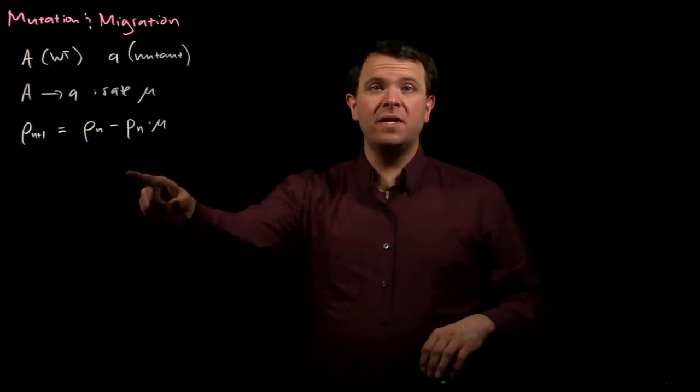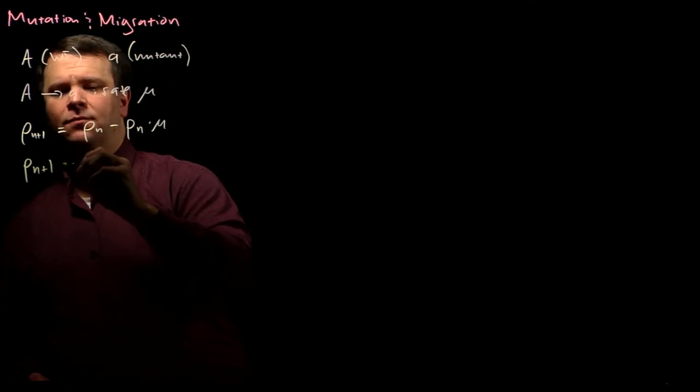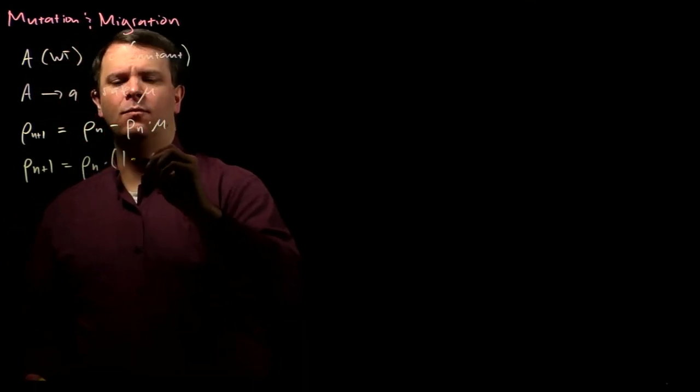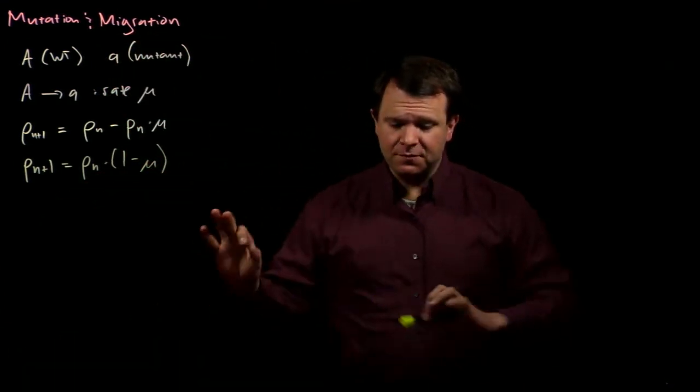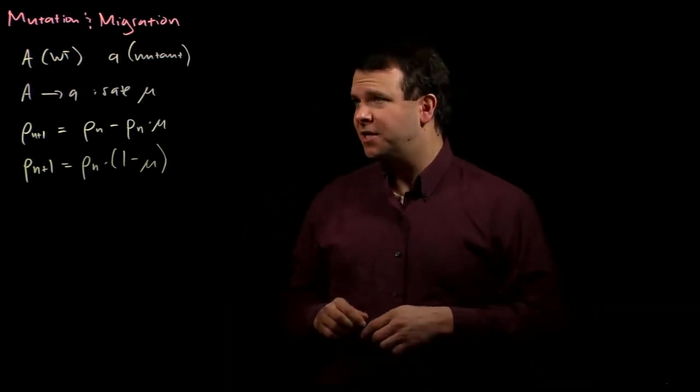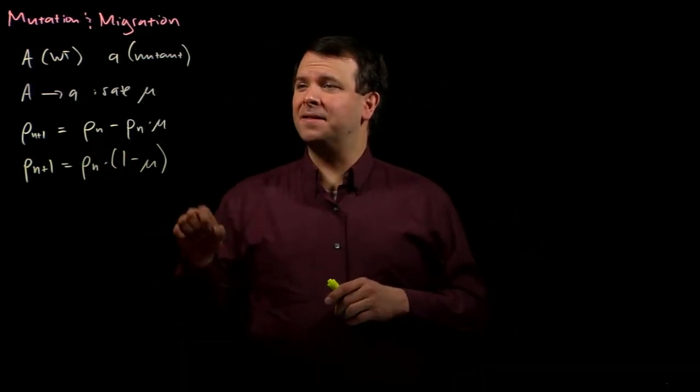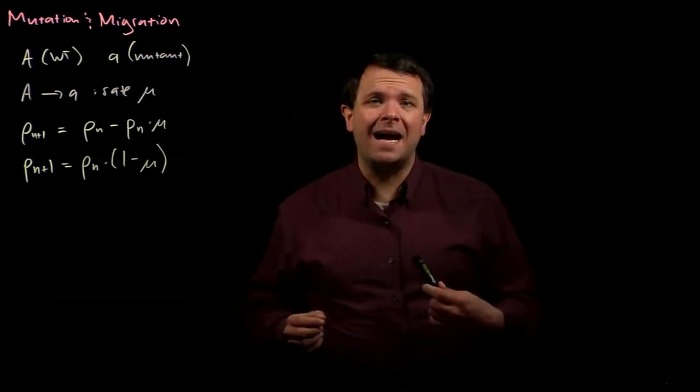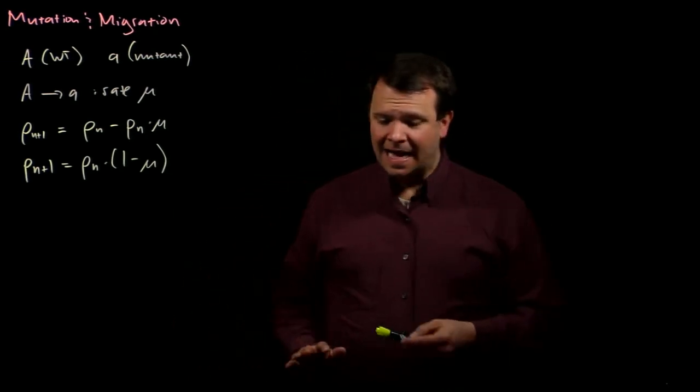You can also rewrite this as p of n plus 1 is p of n times 1 minus mu. And that's just some basic algebra. But this reading also makes some sense, because in each generation, if the rate of loss of big A alleles is mu, then the rate that those alleles did not change is 1 minus mu.